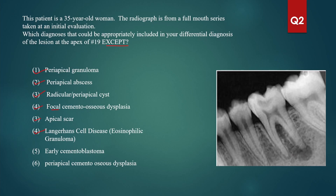Could it be an early cementoblastoma? Yes, in the initial stages where the calcification has not yet occurred inside. Can it be a periapical cemento-osseous dysplasia? No — this is the only one which cannot be included in the differential. The answer is periapical cemento-osseous dysplasia. It is usually in the anterior areas, lower front teeth, whereas focal cemento-osseous dysplasia is usually in the posterior areas.